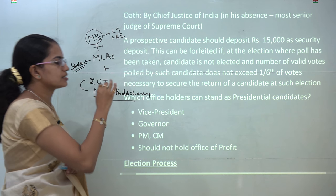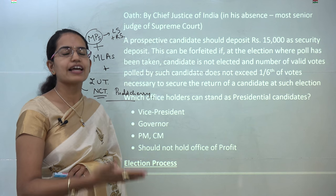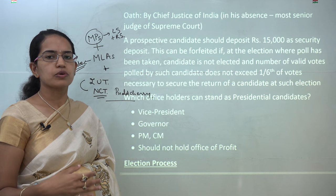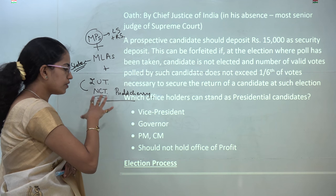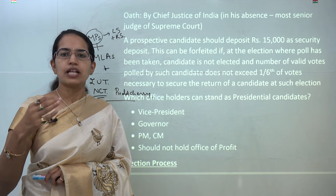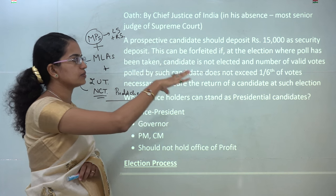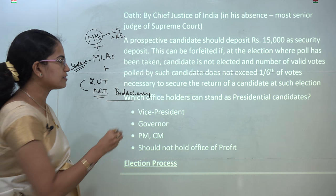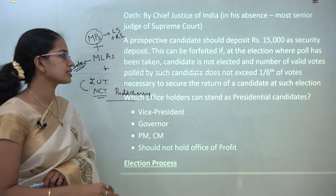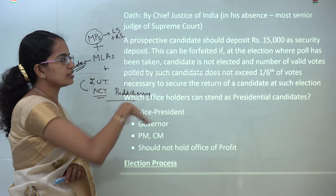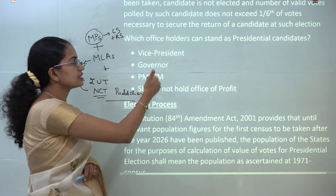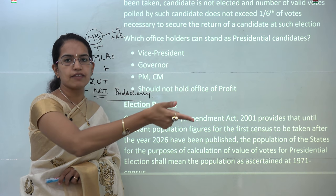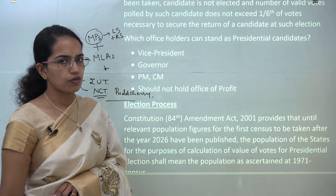The oath of the president is given by the Chief Justice of India, and in the absence of the Chief Justice of India, it is the most senior member of the Supreme Court who administers the oath. A candidate who wants to be proposed as president must file a deposit amount of Rs. 15,000 as security. This deposit would be forfeited only if the candidate is not elected and the number of valid votes polled for that candidate is less than one sixth. In case the president currently holds a position of vice president, governor, prime minister, or council of ministers, he can hold that office and still apply for the presidency.